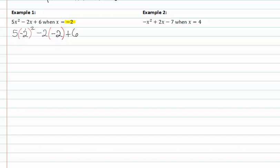Multiplying negative two times itself, it has an even exponent, so I will get a positive four.